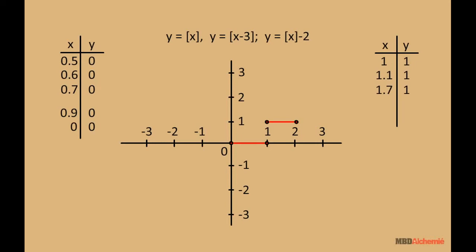For 1.7 again, y equals 1, and y is 1 for x equal to 1.99. So, graph of this will be straight line from 1 until we get to 2. Remember, 2 is not included.